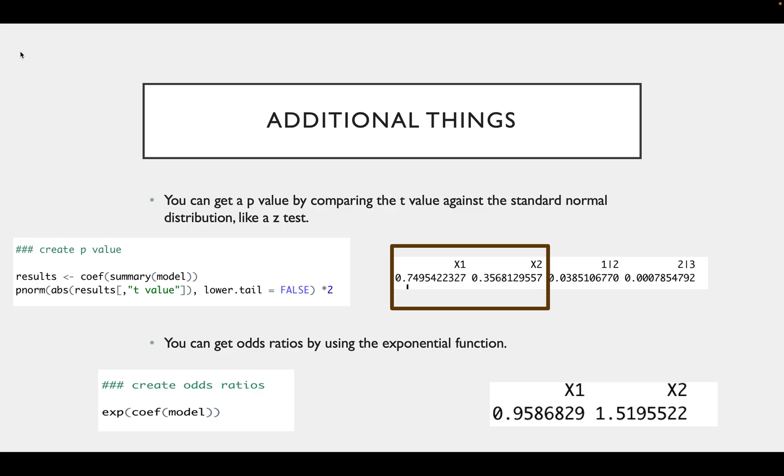While that is the main code for running a regression, there are some things that you may want to also get. You can get a p-value by comparing the t-value against the standard normal distribution by doing something like a z-test.